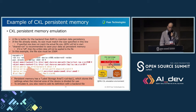Here is an example of the persistent memory type. For persistent memory, a file backend is better than RAM to maintain data persistency. If the file already exists, its size must match the size specified in the file line — if the sizes do not match, QEMU will fail to start. shared=on is recommended to save your data as persistent memory; if it's off, written data will not be applied to the shared file. In this example, the file size must be 256 megabytes. Additionally, persistent memory has a label storage area in the CXL specification, which stores settings when the internal area of the device is divided for use. To emulate it, you also need to add its definition with the backend file.